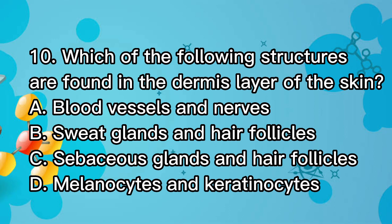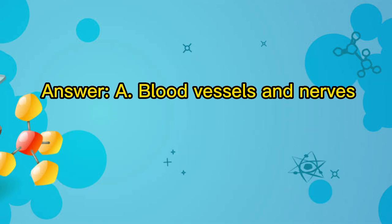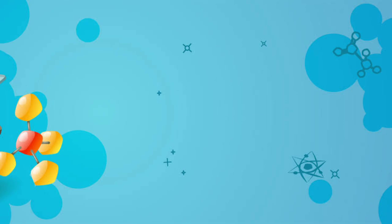Question 10. What is found in the dermis layer of the skin? A. Blood vessels and nerves. B. Sweat glands and hair follicles. C. Sebaceous glands and hair follicles. D. Melanocytes and keratinocytes. Answer: A. Blood vessels and nerves. Great job!